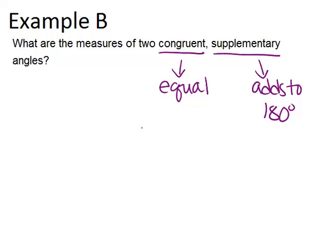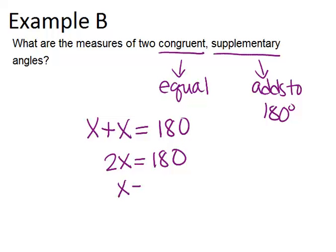We could also solve this by making our angle that we're solving for equal to X. Since we have two angles that have to add up to 180 degrees and have to be the same, they're each going to be called X, this would be my equation. So I get 2X has to equal 180, so X has to be 90 degrees. If two congruent supplementary angles exist, they each have to be 90 degrees.